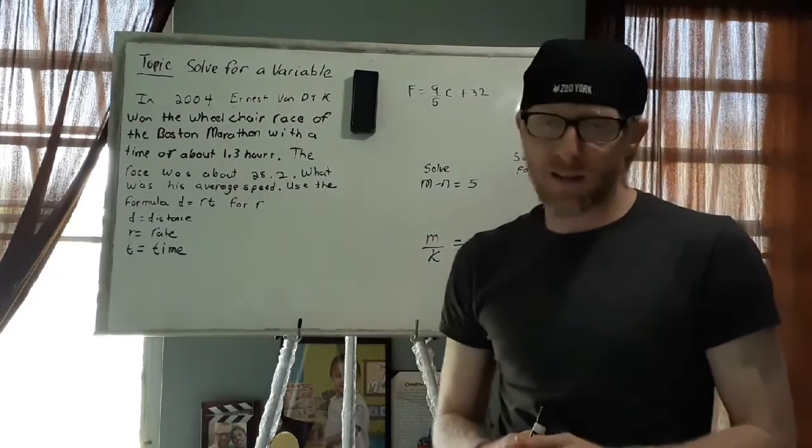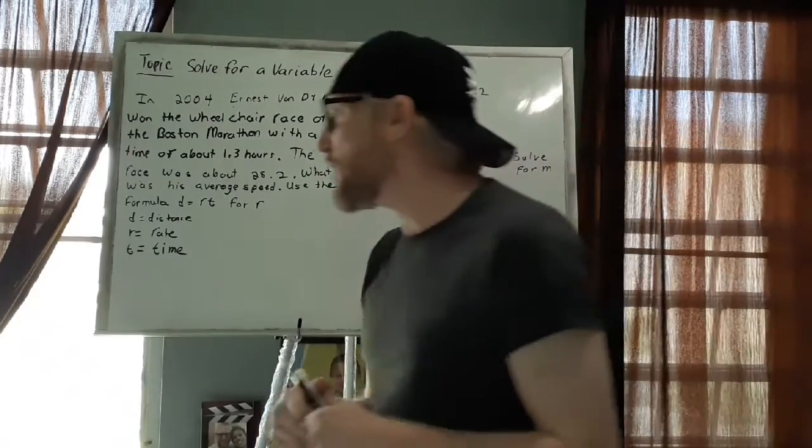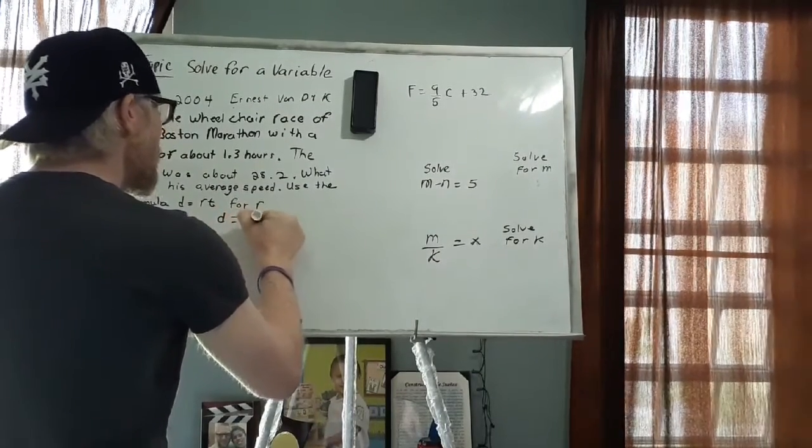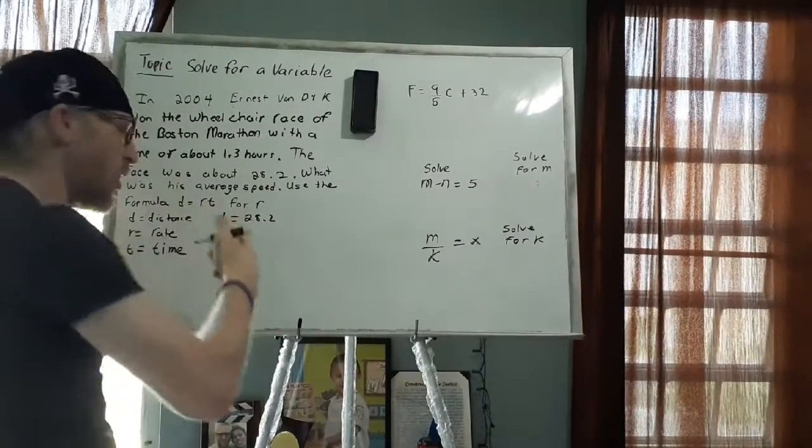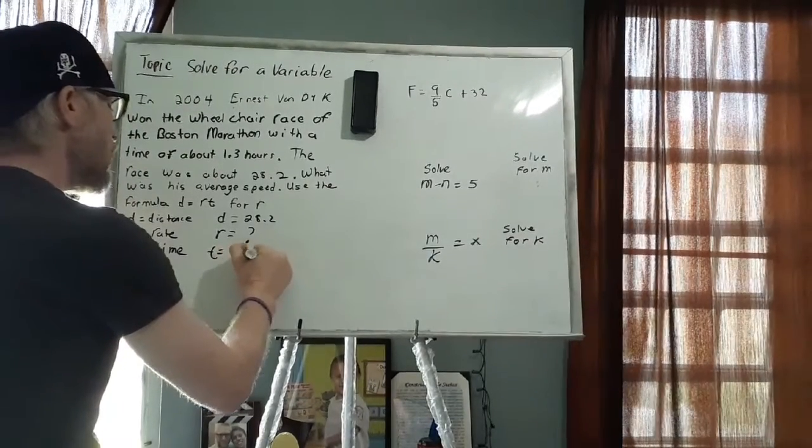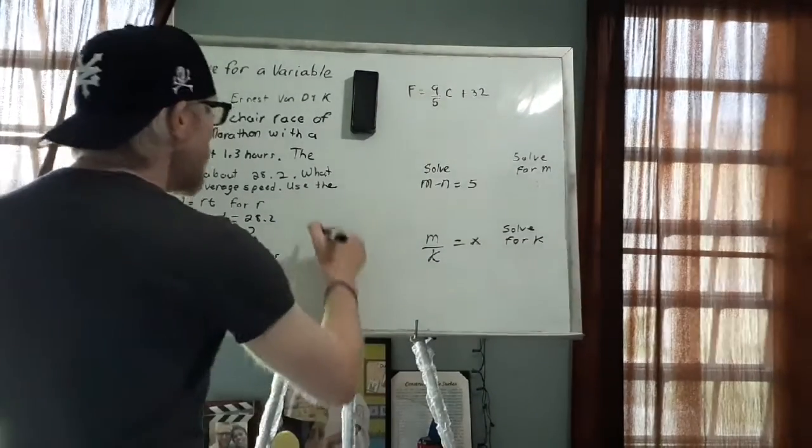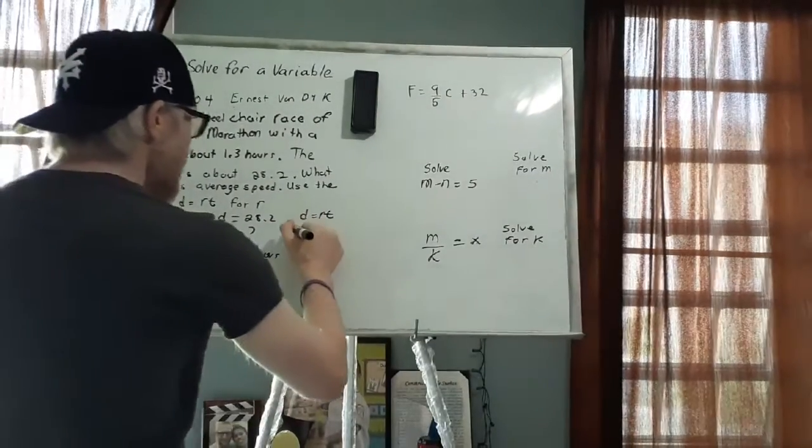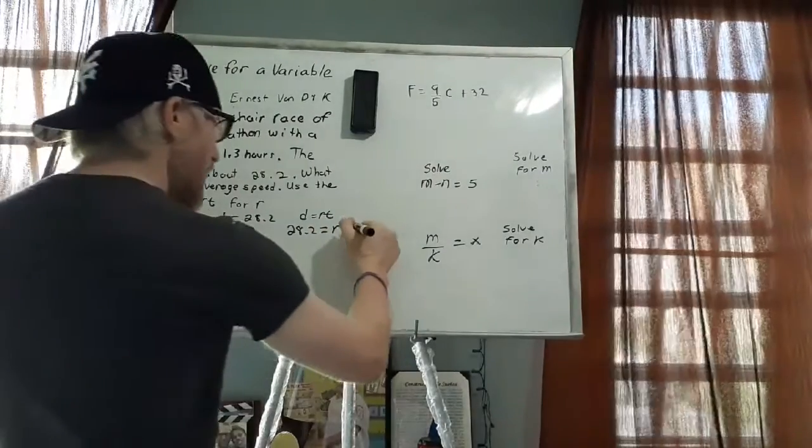Because when we solve for a variable, there's always some information that the problem gives us and there's always some information that the problem asks us to do. So if we can define what that is, we should be fine. So D is distance, R is rate and T is time. So what are we going to do? Well, we're going to plug in our numbers. D is 28.2 and that's what they give us. R is what we're looking for because it says solve for R. So we're just going to write a question mark here. And the time is approximately 1.3 hours.